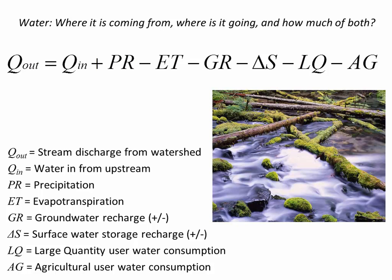Groundwater recharge can be plus or minus because sometimes water will seep out — like an artesian well. There are places like Barbersville Park where a hillside is perennially wet even when it hasn't been raining, because water comes out of the ground onto the surface. So most of the time infiltration from a storm goes down into the soil, but sometimes it comes back out as base flow into streams — like springs.